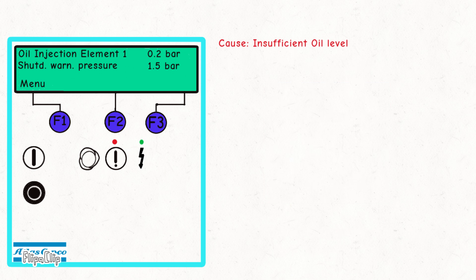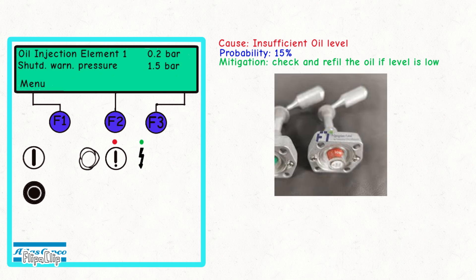The third cause is insufficient oil level, with a probability of 15%. Perform a daily inspection of the oil level. Ensuring the oil level is adequate is essential for proper compressor operation. Daily checks help avoid this issue.